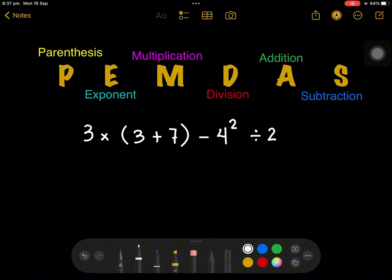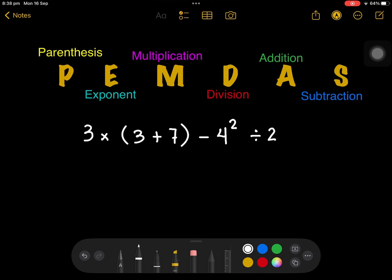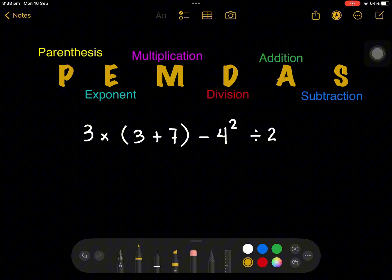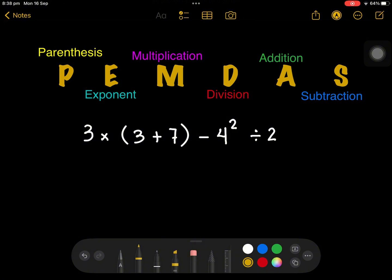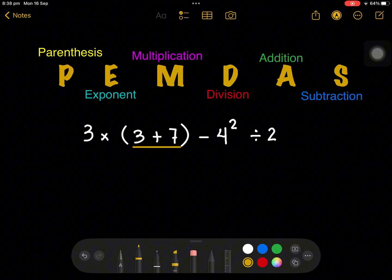This is exactly similar to BODMAS or BIDMAS. And aside from that, we also need to follow the left to right rules. So in this case, for example, if you have 3 × (3 + 7) - 4² ÷ 2.